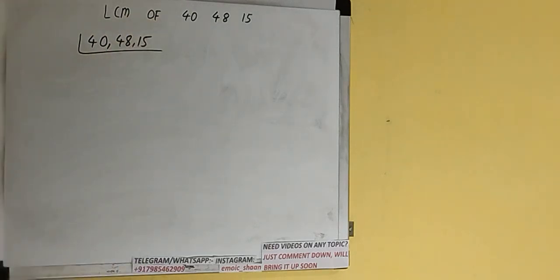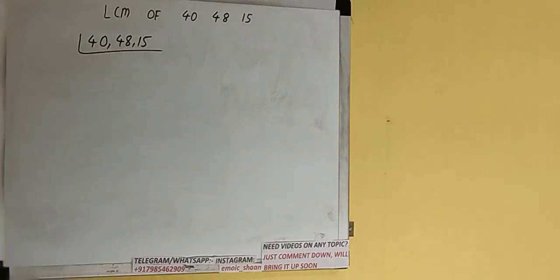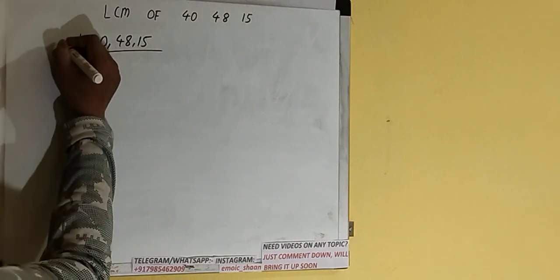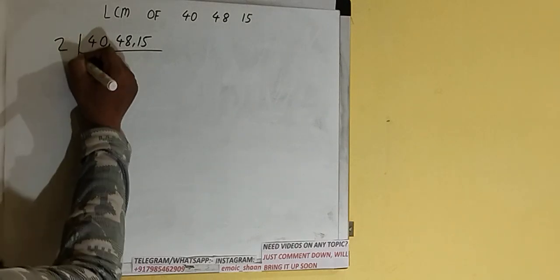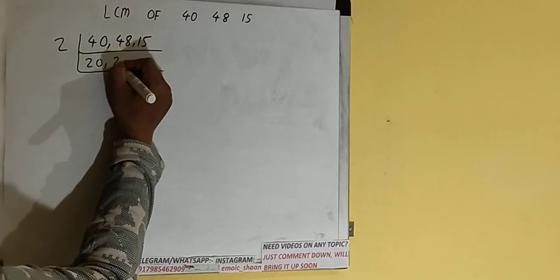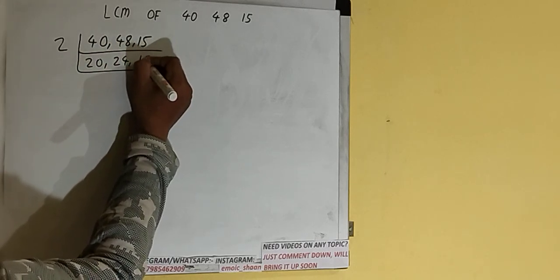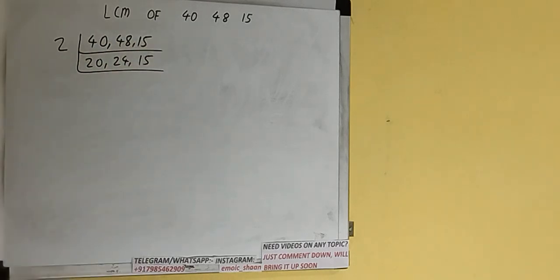Next, we need to start with the lowest prime number, 2, and check if any of the numbers are divisible or not. The first and the second number are divisible by 2, but not the third one. So we divide the first and second by 2: the first number becomes 20, the second becomes 24, and 15 is not divisible so we copy it down.